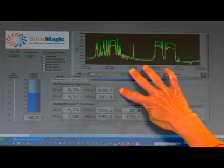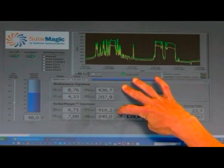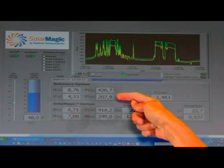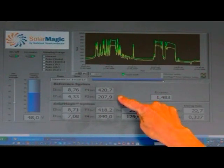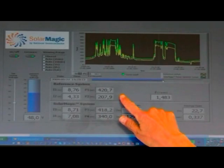Strings number one and number three indicate strings without any shading. String number two shows the output of the unassisted string with shading, and you can see that it's around 208 watts.